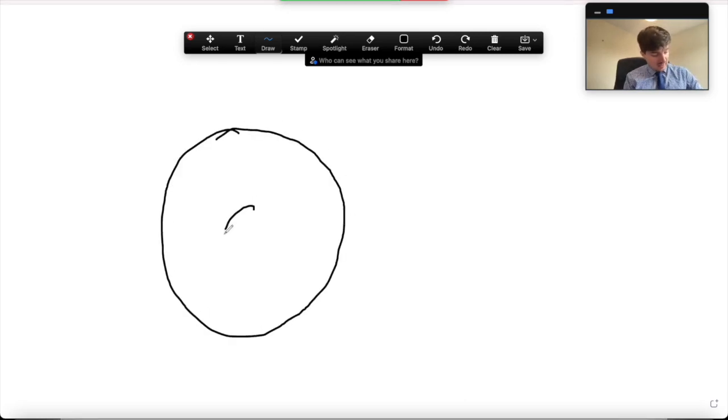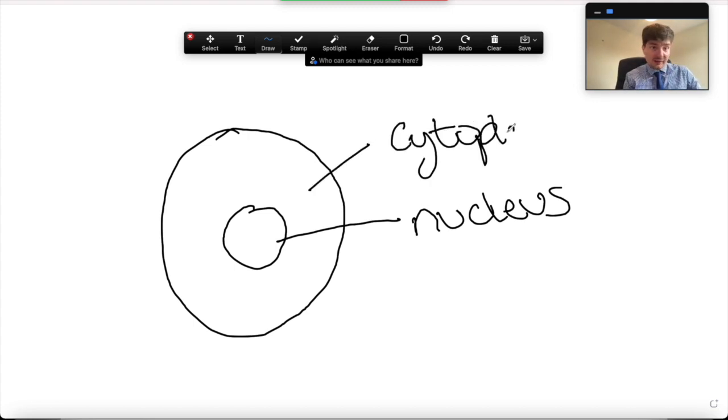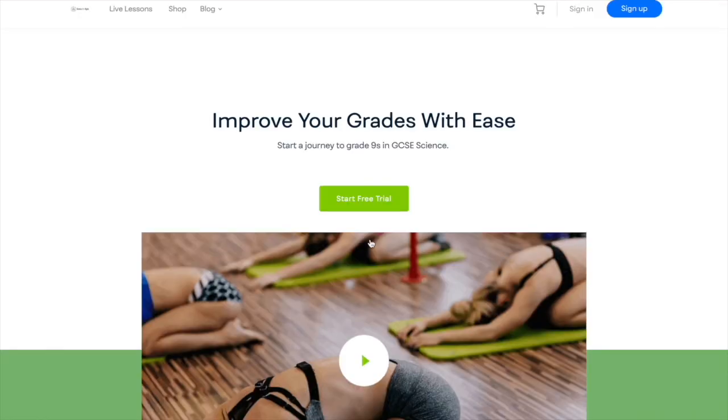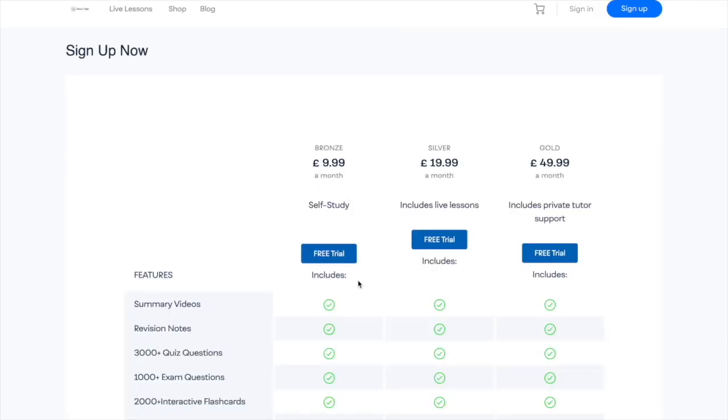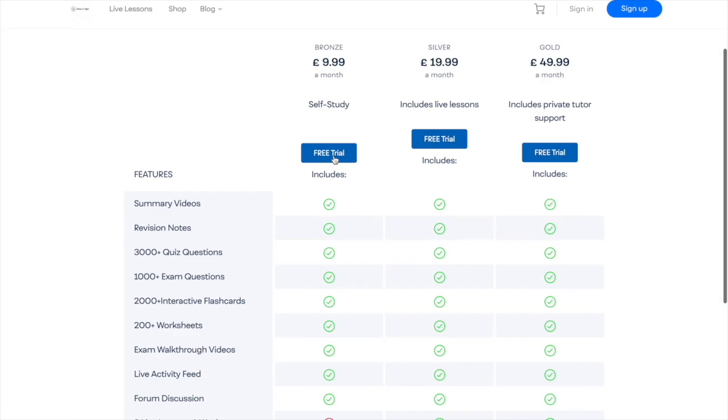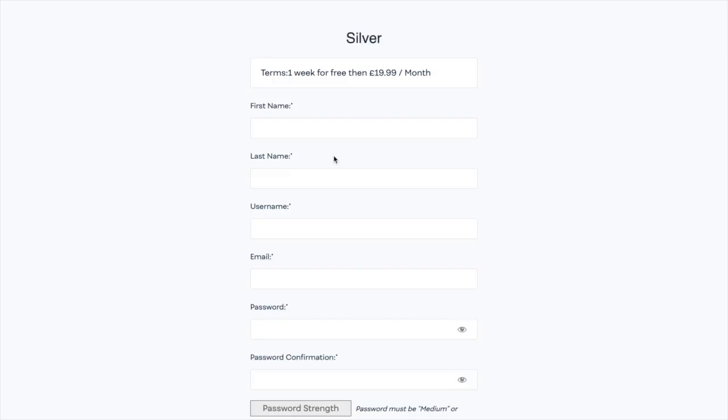This means that for an extra £10 a month, you can access at least 12 hours of lessons a month—that's under £1 an hour, which is incredibly cheap. Still not convinced? Try us completely free for seven days and cancel anytime, completely free of charge. We offer this because we're convinced that you'll love us, so try us now.